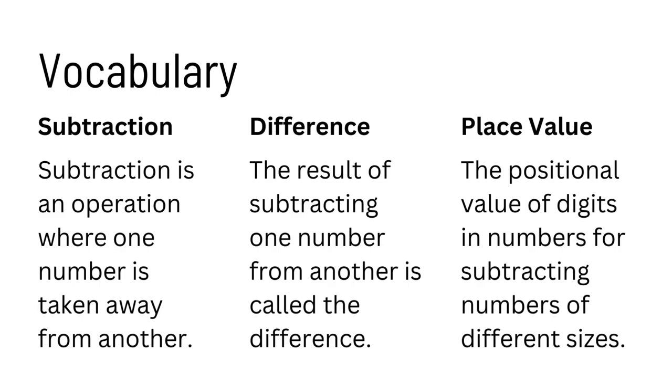The next word is place value. The place value is the positional value of digits in numbers for subtracting numbers of different sizes. Let's say I had the number 456. The place values would be the hundreds, the tens, and the ones. The six would be in the ones place, the five would be in the tens place, and the four would be in the hundreds place.